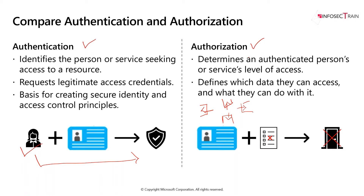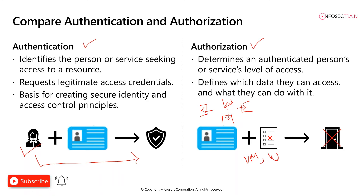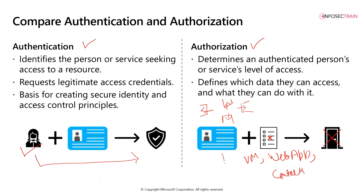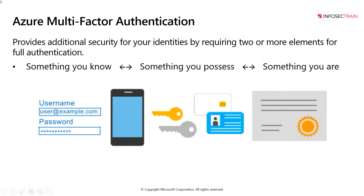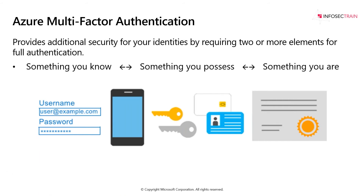Same thing — you enter your username and password. If there is multi-factor authentication, you go through either an authenticator app, email, SMS, or a call. After that, once I'm verified, what can I access? There are multiple resources like VMs, web apps, containers. Once you find out I am an authorized person, what I can access out of all these things is part of your authorization. In Azure, we can enable multi-factor authentication, which has a few elements: something you know like a password, something you possess like a card or token, and something you are — your biometrics, which you can't change.